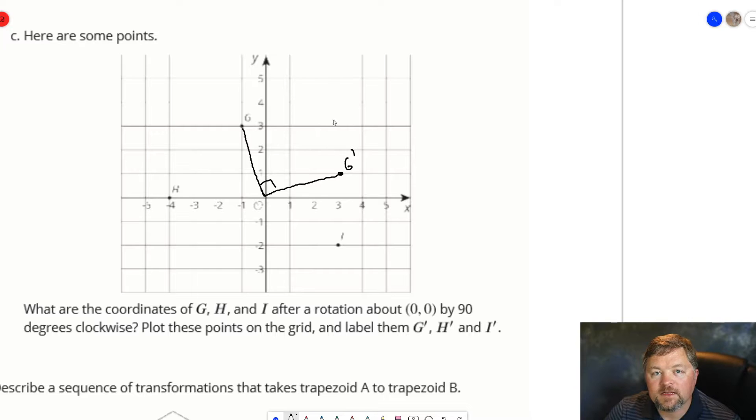This will be point G'. Now, let's look quickly at the coordinates of these points. G is negative 1, comma 3. And G' is 3, comma 1.